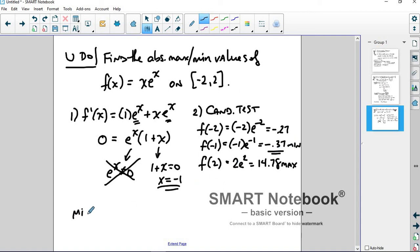So once again, we have our minimum value at (-1, -e^(-1)). Even though we rounded it off, you need to report it exactly. And then the maximum value is (2, 2e²). That's your max. So that's all this section is.